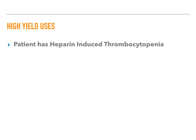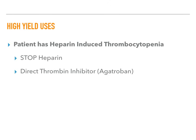If a patient is placed on heparin and develops heparin-induced thrombocytopenia, the first step is to stop the heparin and then get them on a direct thrombin inhibitor like argatroban. This is high yield because tons of patients receive heparin prophylaxis in the hospital, and while HIT is clinically rare, it is very common on exams.